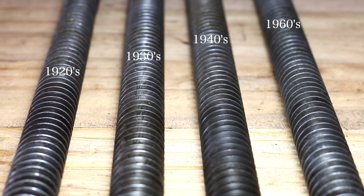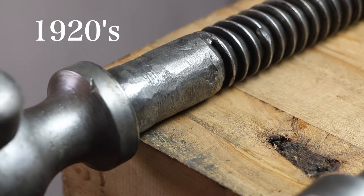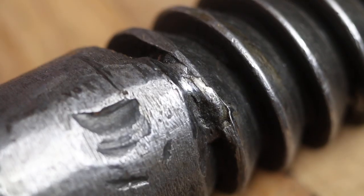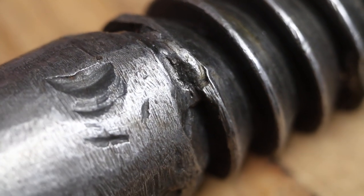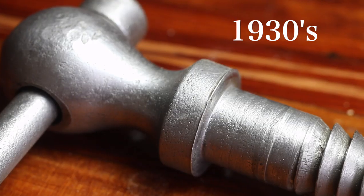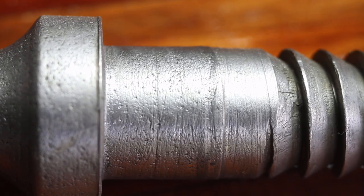There was no difference to the threaded rods that I could see. However, interestingly, I noticed that in the 1920s version the knob had been welded to the threaded rod. From the 1930s version onward, the knob and the threaded rod were cut from a single piece of steel.